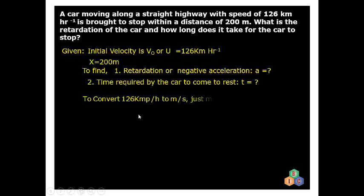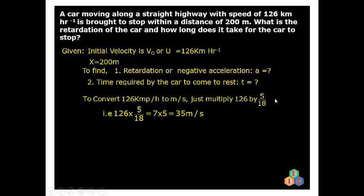First we need to convert 126 kmph into meters per second. To convert, multiply 126 by 5/18. Since 18 sevens are 126, we get 7 × 5, which equals 35 meters per second.